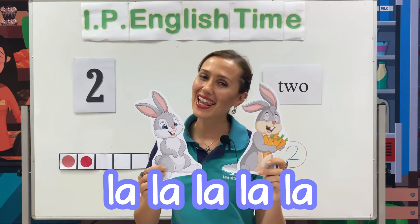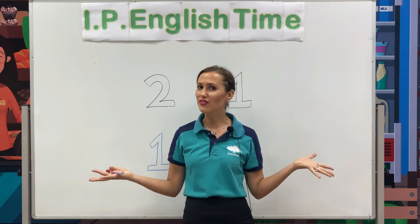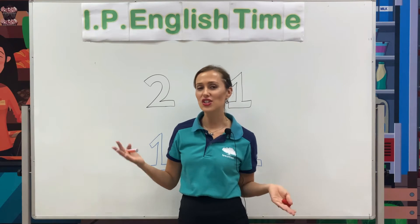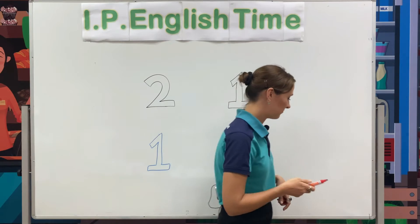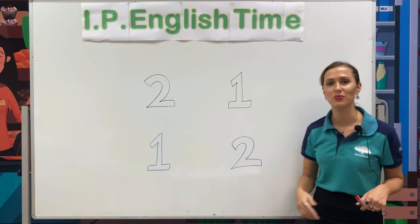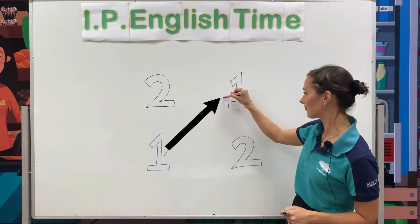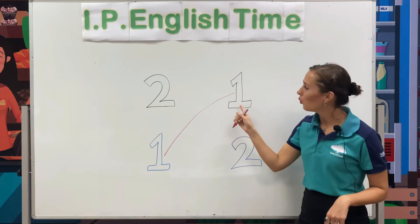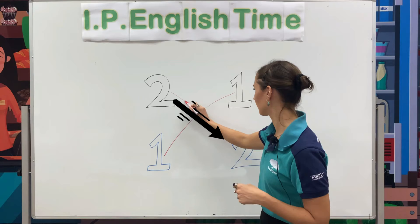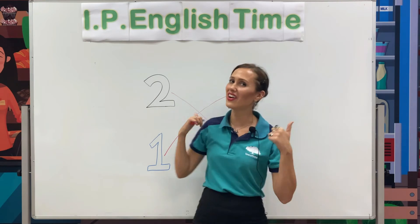Okay, for this lesson we will do some matching. I will make a line from the number to the matching number. Let's have a look. We have number 2, number 1, number 1, and number 2. Now let's match number 1 with number 1. Now let's match number 2 with number 2. Okay, very good, we've matched the numbers.